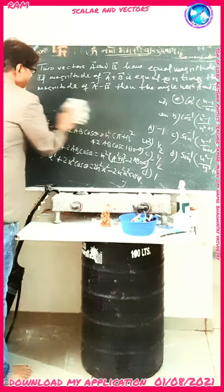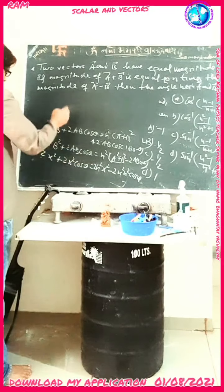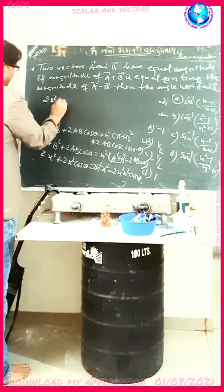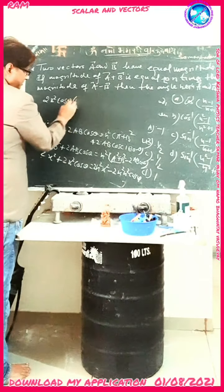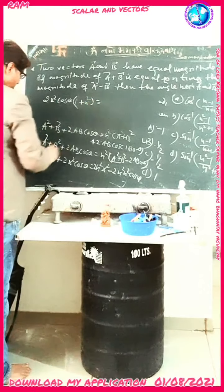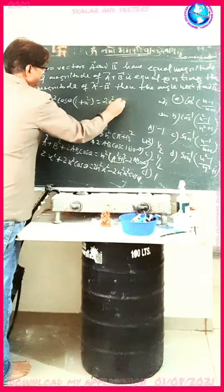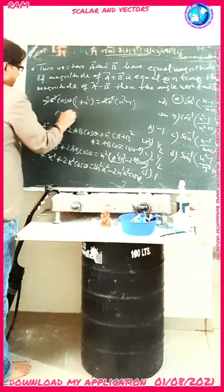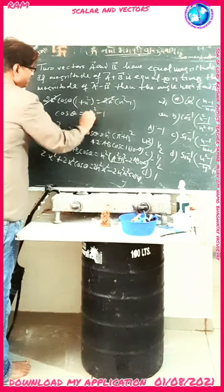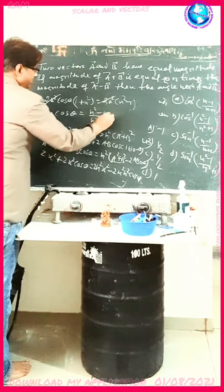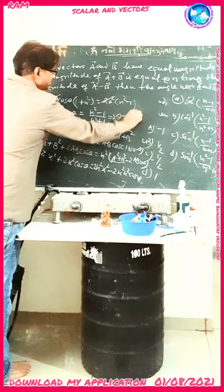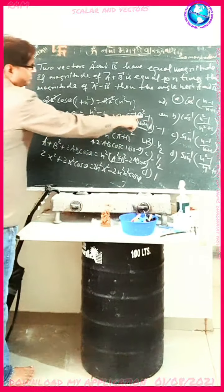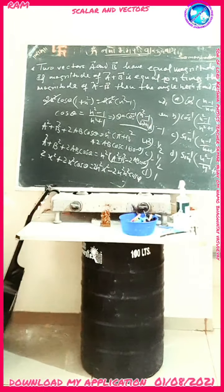Rearranging, we take 2x squared common. We can get 2x squared into 1 plus cos theta on this side, and 2x squared times n squared minus cos theta on the other side. We get 1 plus n squared equals n squared minus 1 over n squared plus 1. So cos theta equals n squared minus 1 over n squared plus 1. The correct option is d: theta equals cos inverse of n squared minus 1 over n squared plus 1.